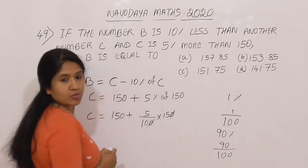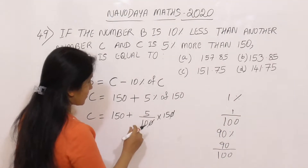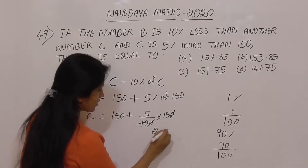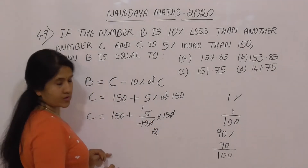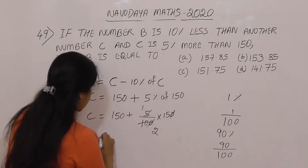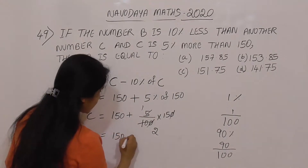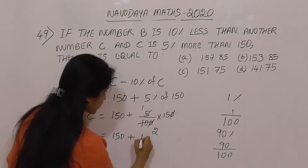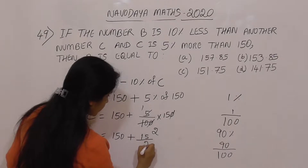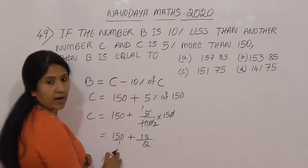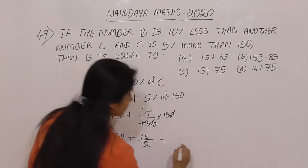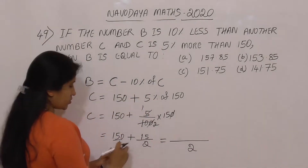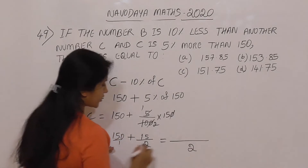Cancel out the zeros. 5 by 100 into 150 simplifies: 150 into 2 equals 300 divided by denominator. So we get 15 by 2, and 150 into 2 equals 300. Adding 15, we get 315 divided by 2.